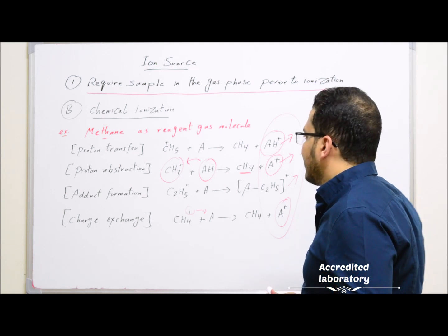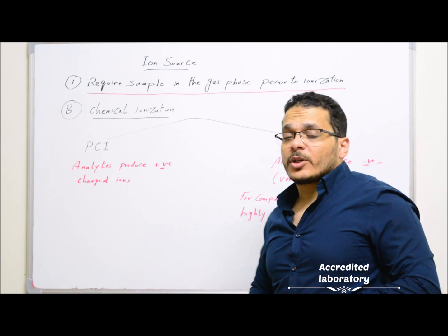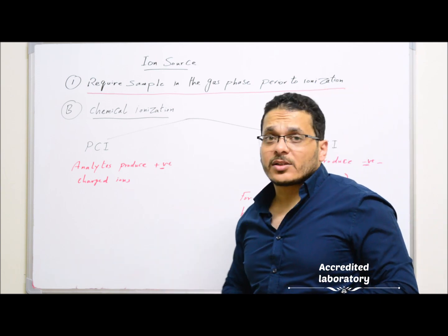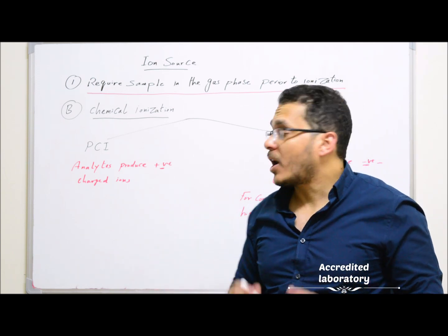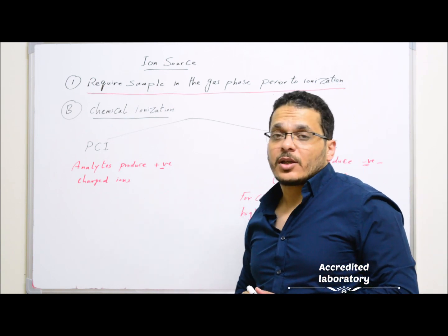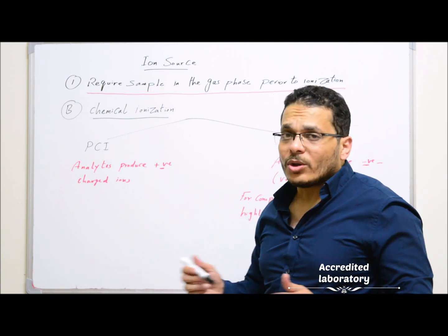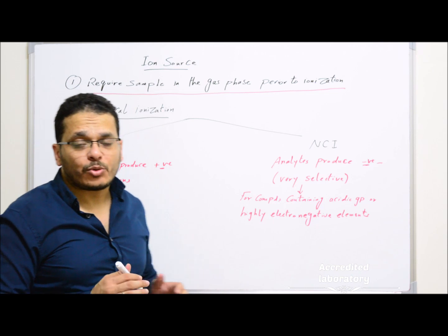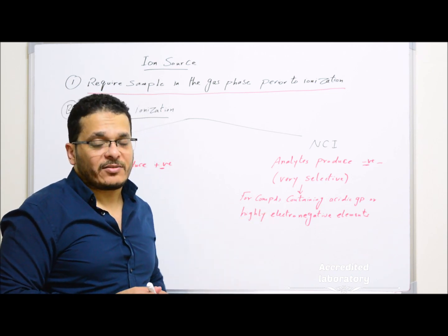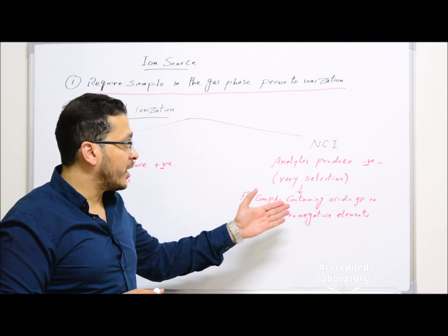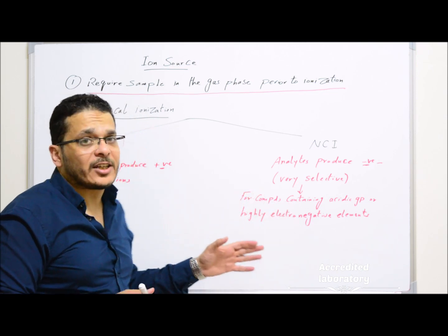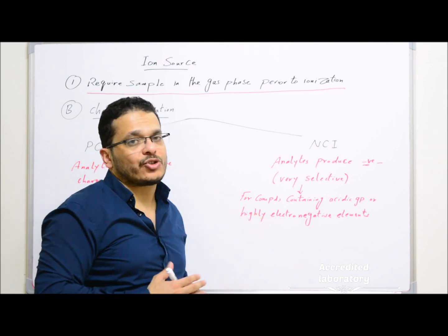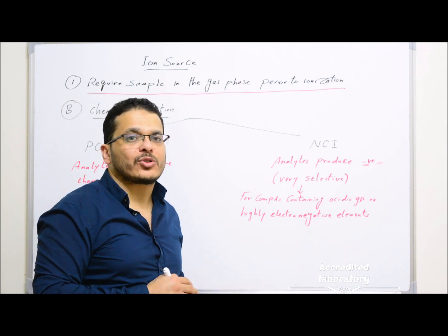There are two types of chemical ionization: positive chemical ionization, where analytes produce positive charged ions — this is common because almost all analytes can produce positive charged ions. Negative chemical ionization, where analytes produce negative charged ions, is very selective — only for compounds containing acidic groups or highly electronegative elements like halogens. So this is specific for analytes that can produce negative charge, and these are very few compounds.